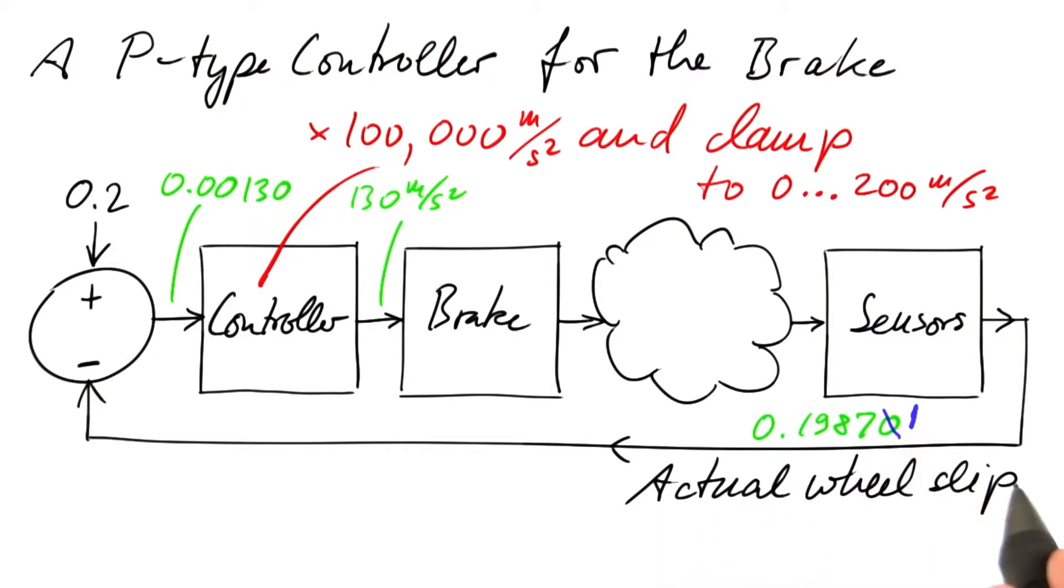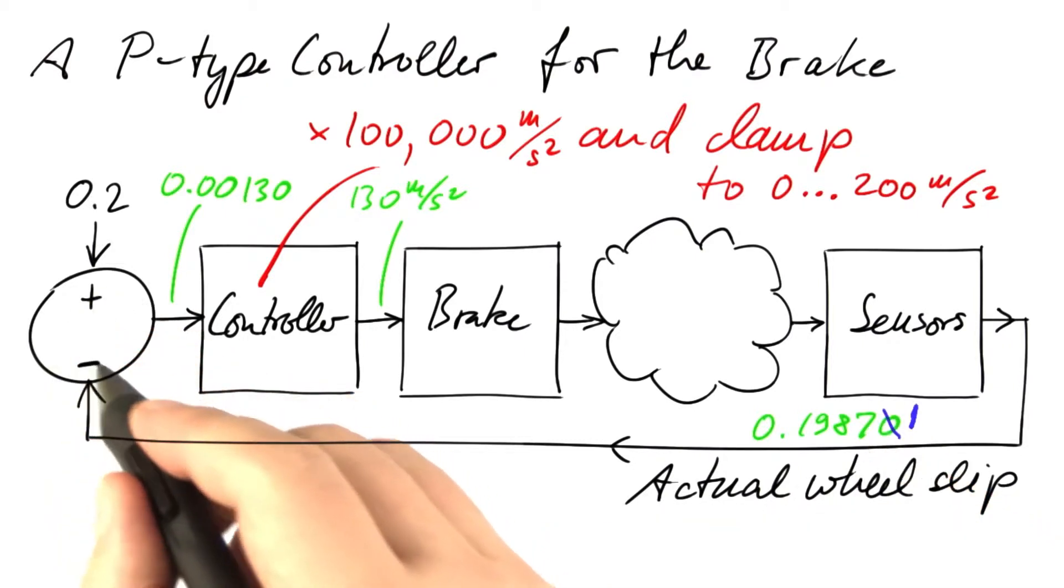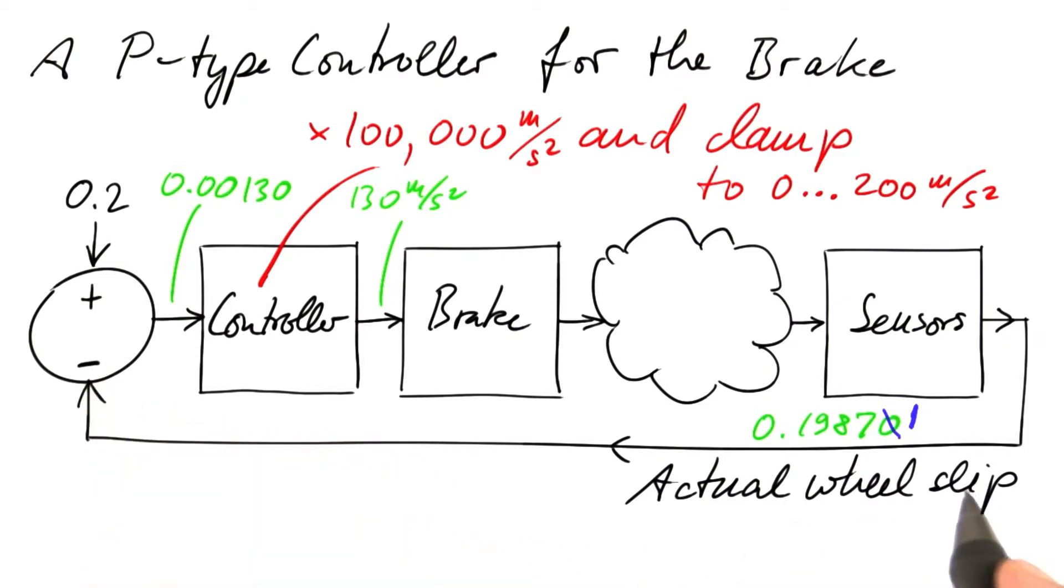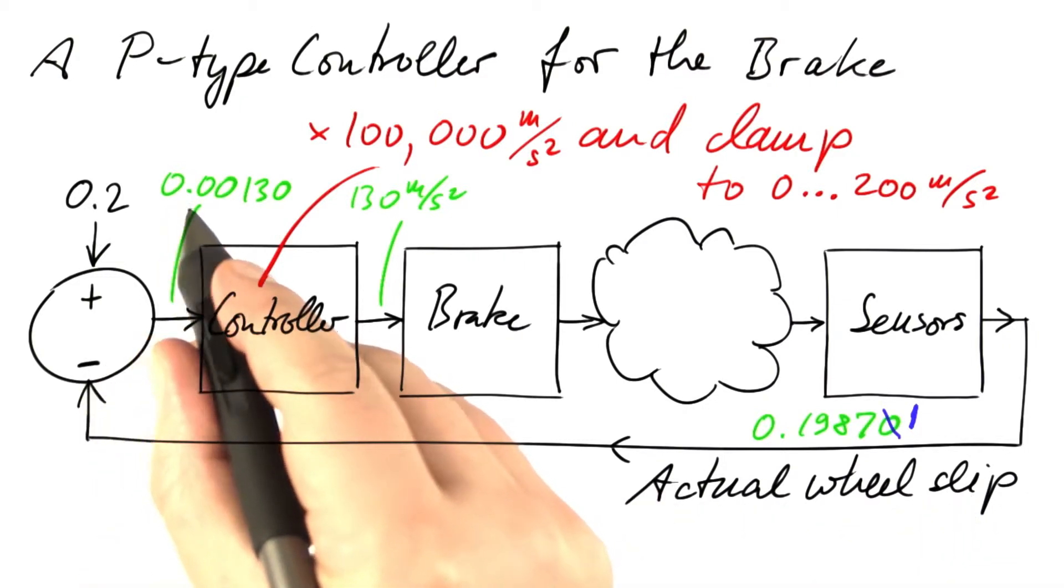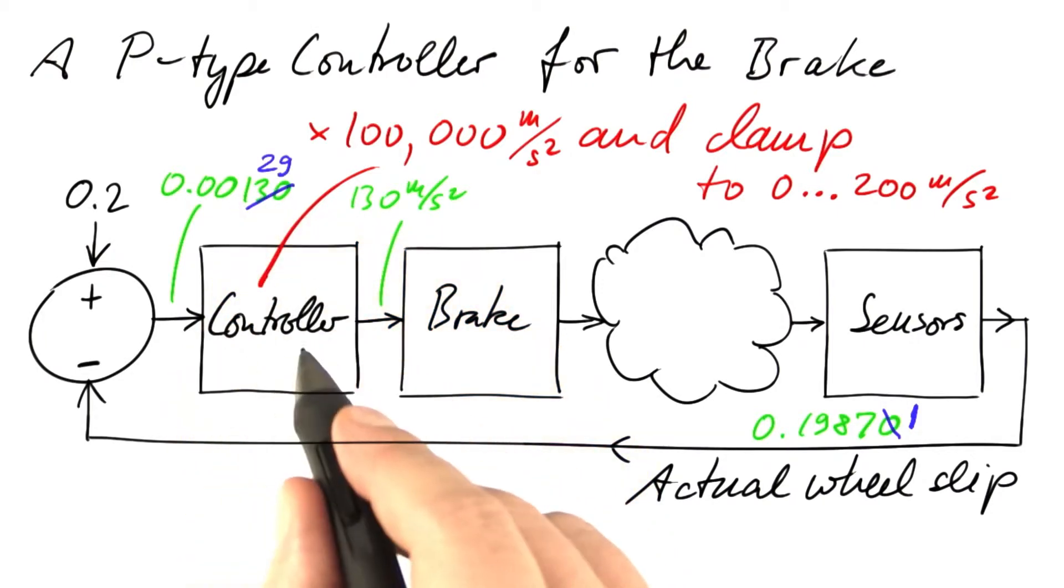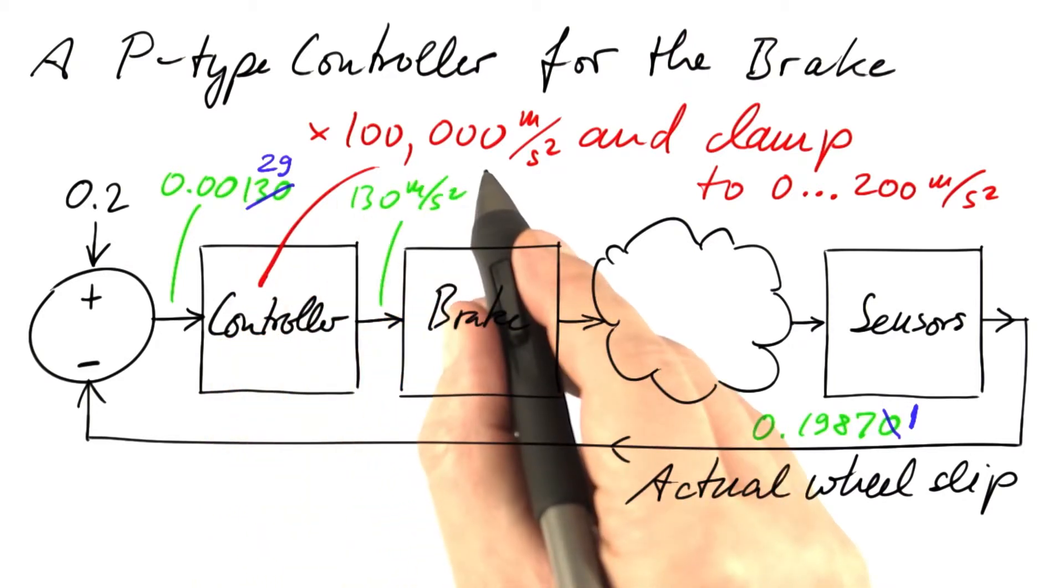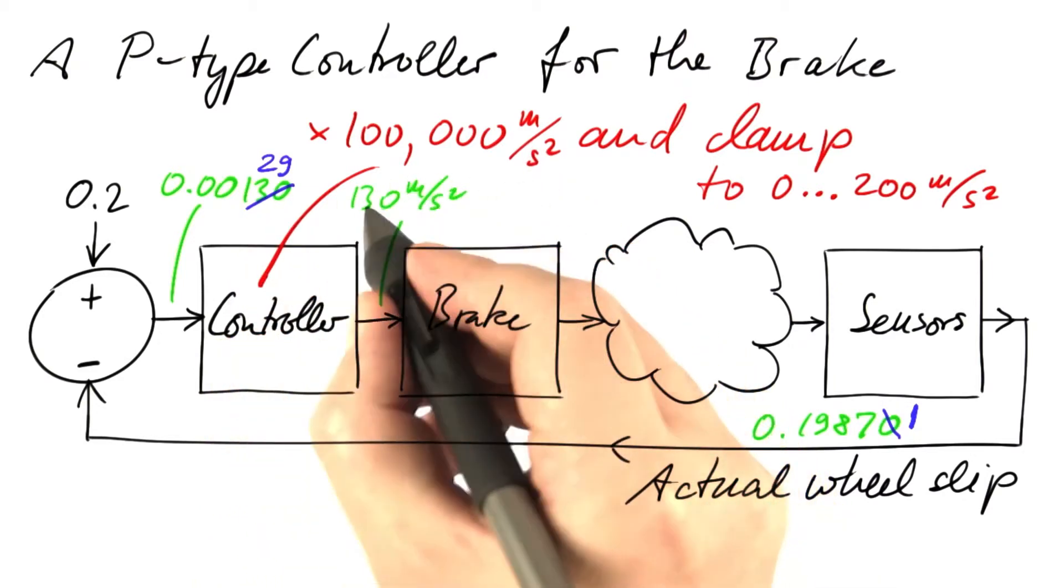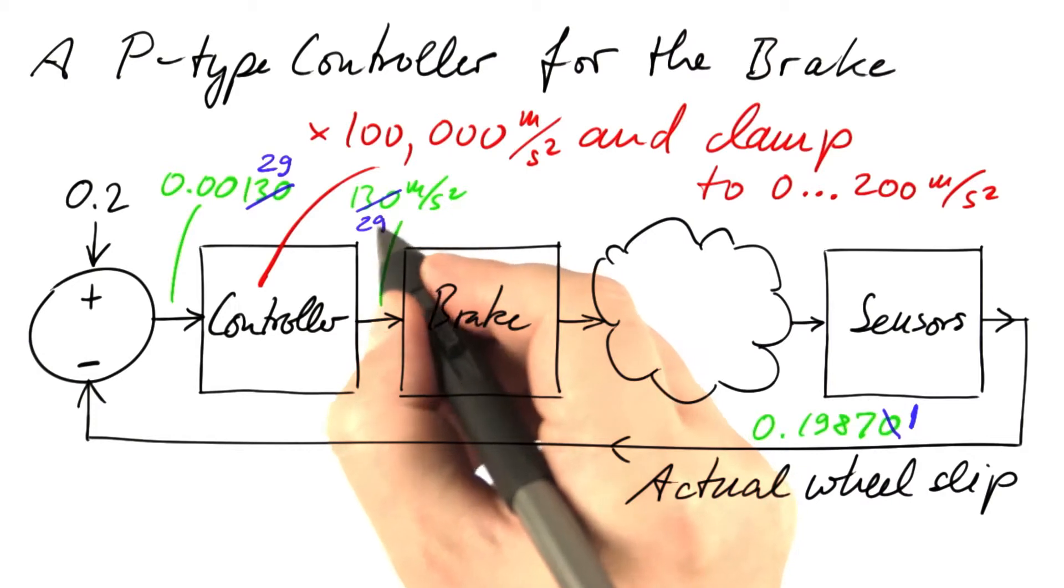When the actual wheel slip goes up a little, the difference is going to decrease. We are subtracting the actual wheel slip. This is going to become 0.00129. The error gets a little smaller. Multiplying this error by 100,000 meters per second squared results in 129 meters per second squared.